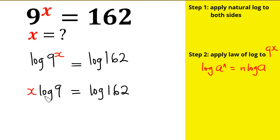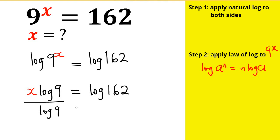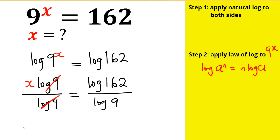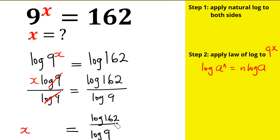Because what I'm looking for is x, I don't need log 9 on that side. So what I'm going to do is divide both sides by log 9 to eliminate it. Therefore, x is going to equal log 162 over log 9.